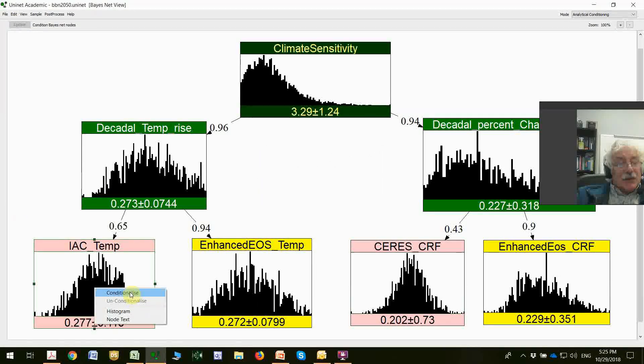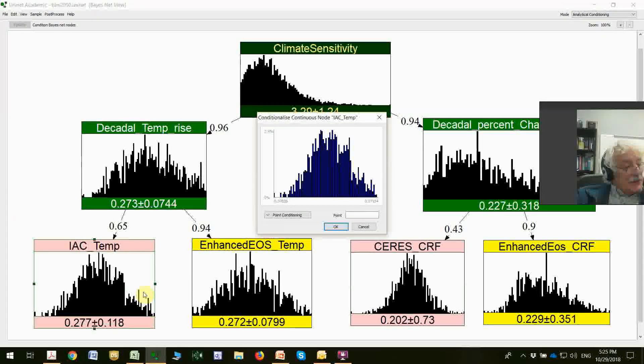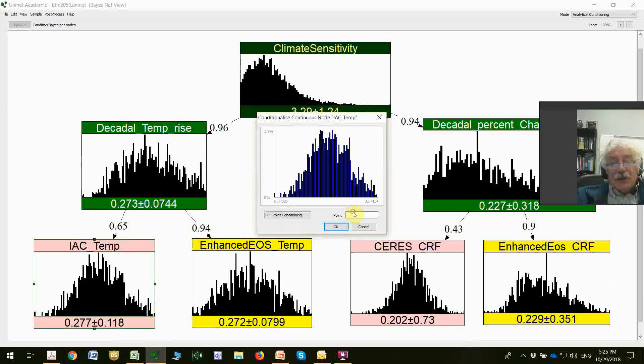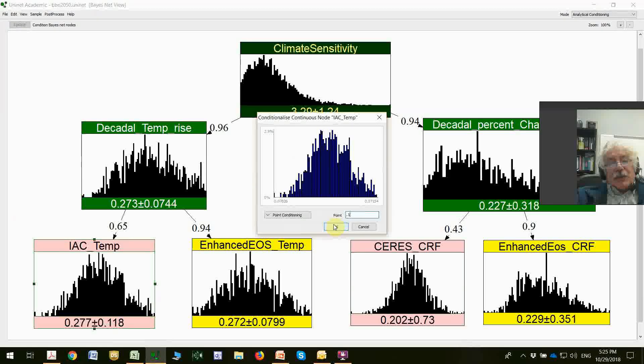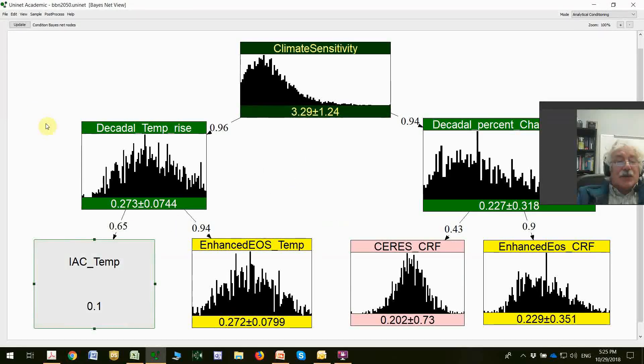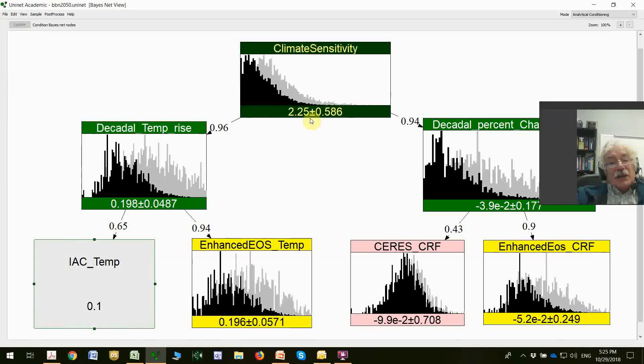I'm going to now undo this measurement by unconditionalizing. I want to conditionalize over here on the current system for measuring temperature. I want to take a rather low value of 0.1. If temperature goes up by 0.1 degrees centigrade per decade, it goes up by 1 degree in a century, a fairly low value of equilibrium climate sensitivity. The expected value is now 2.25, quite a bit lower. But it's not 1 because of all the noise in these measurement systems.